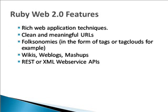Rich internet application techniques include optionally Ajax-based, CSS, XHTML markup, microformats, and RSS feeds. In Ruby, we have clean and meaningful URLs, folksonomy features such as tags or tag clouds, wikis, web blogs, mashups, RESTful XHTML web services, and APIs.